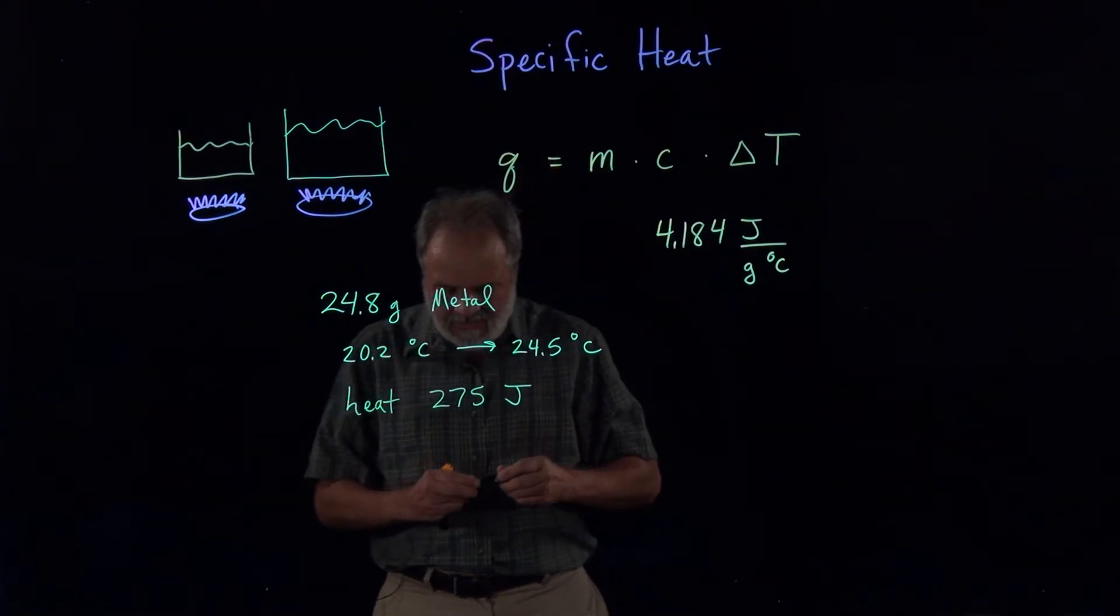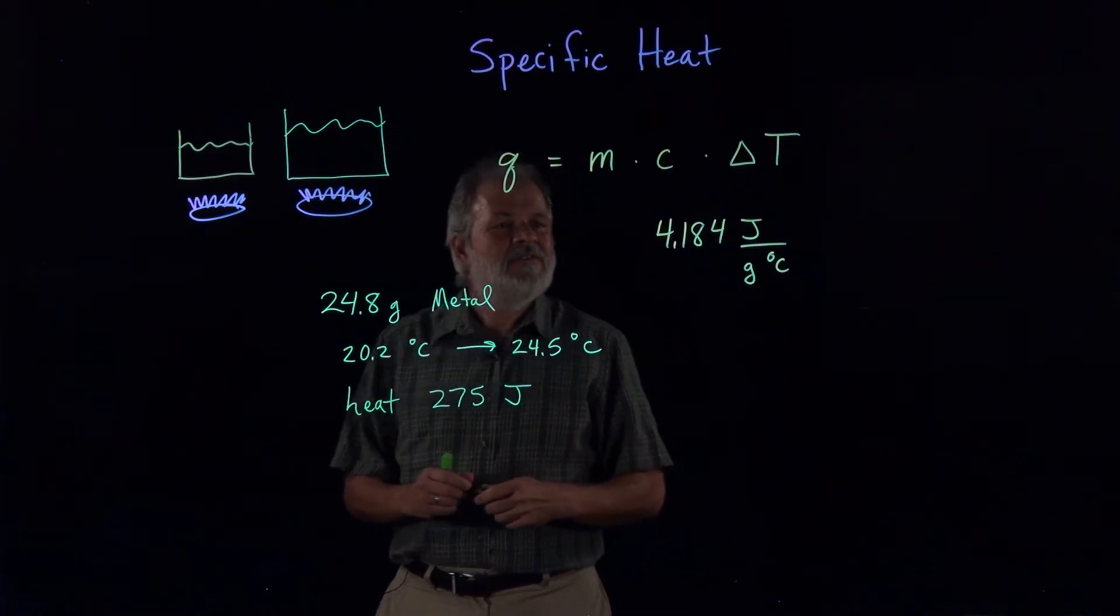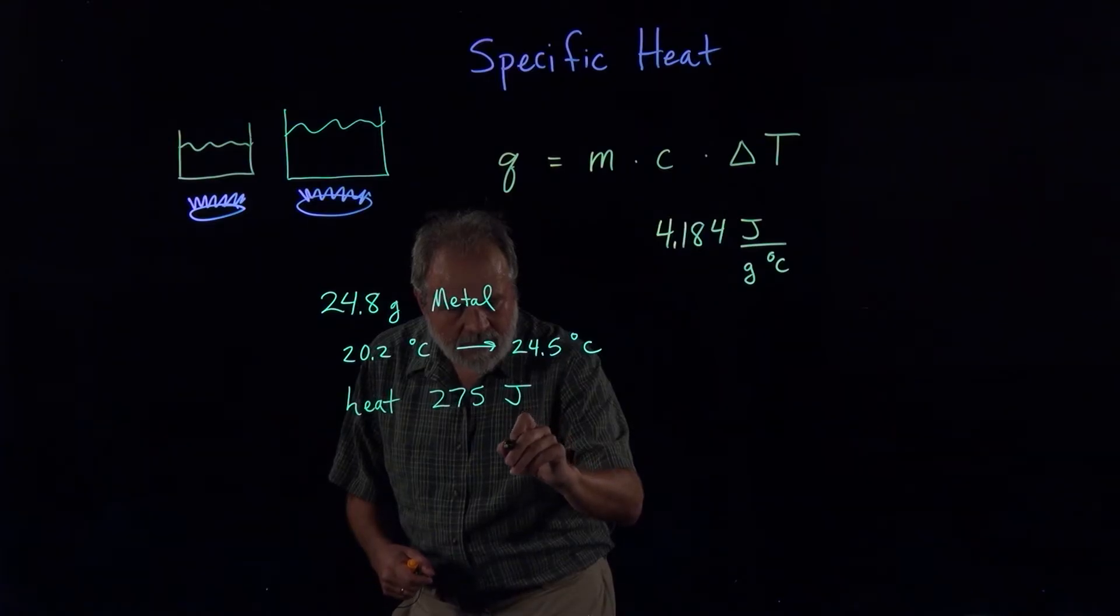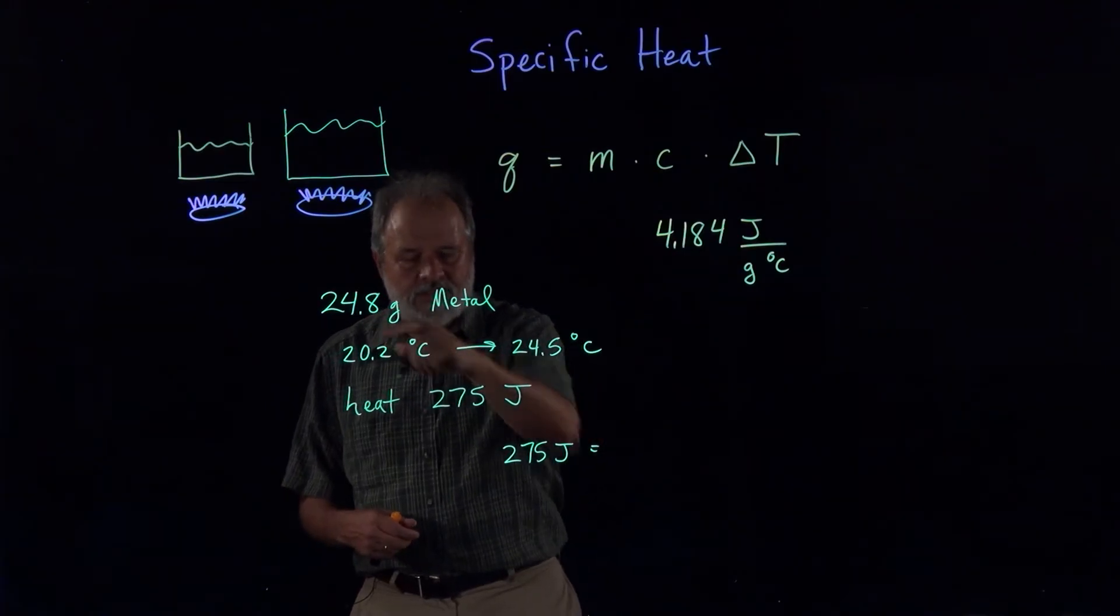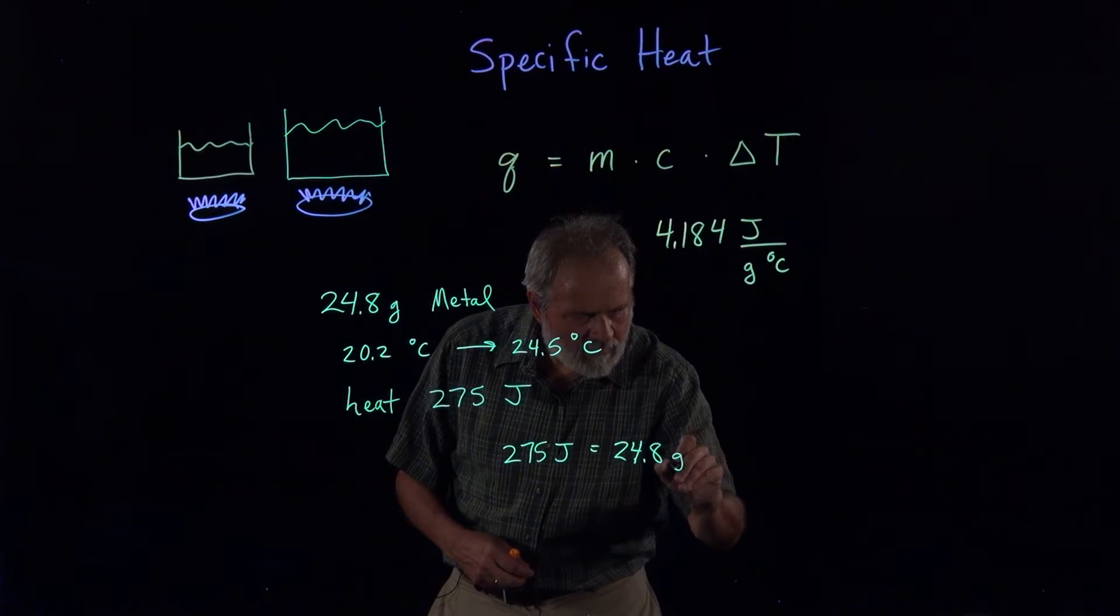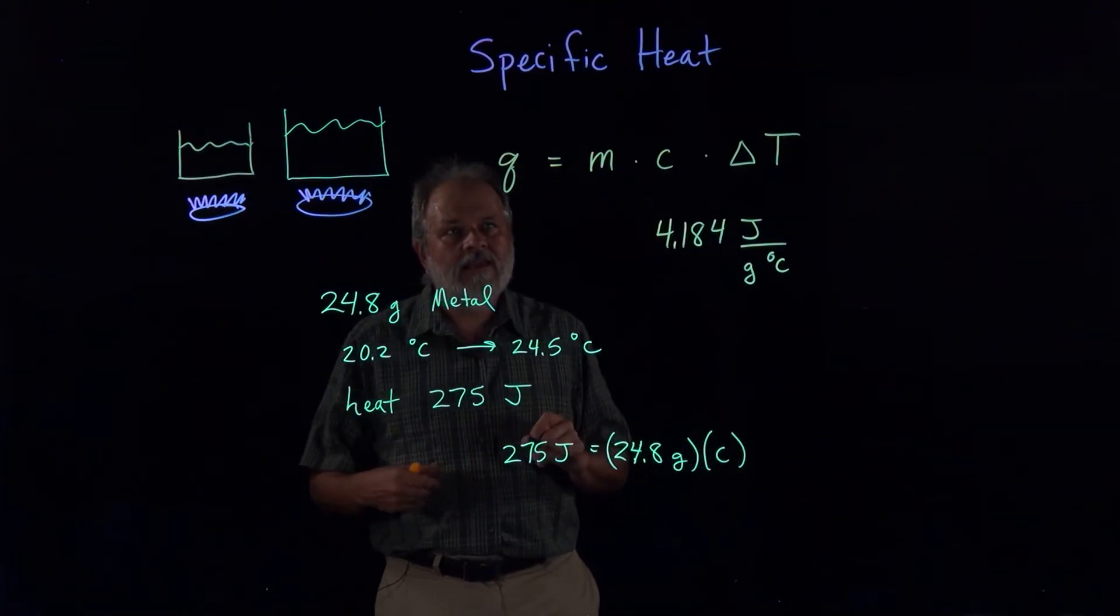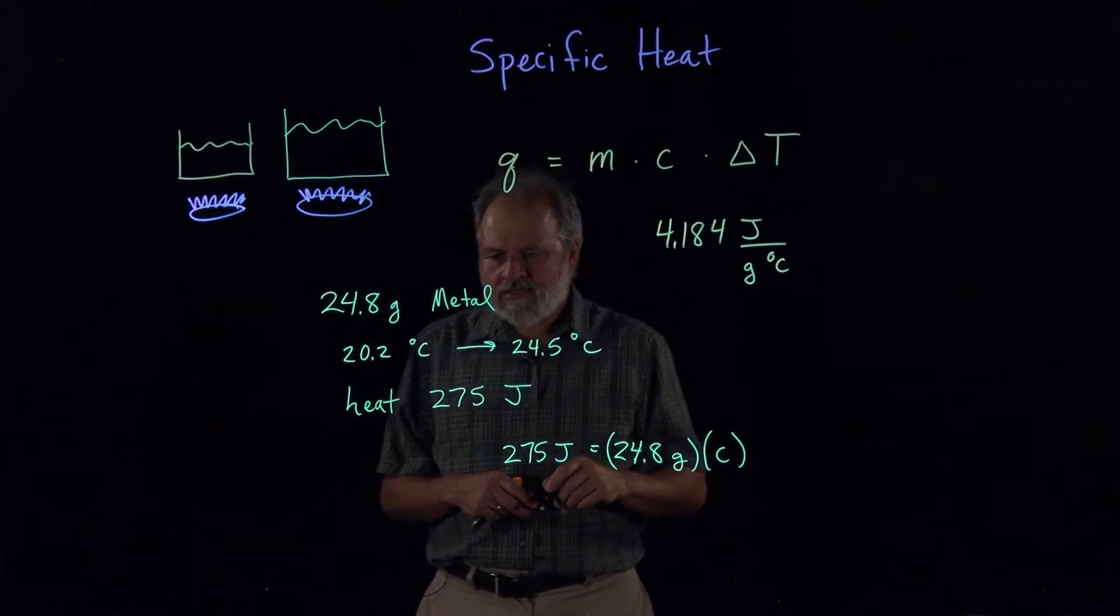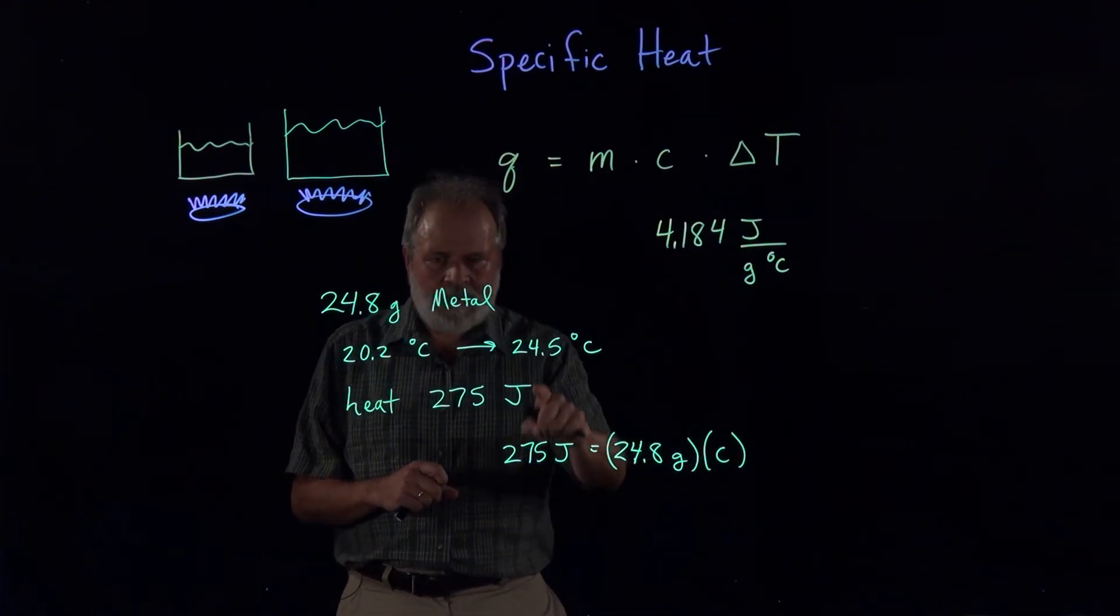Just plugging all these numbers in, and of course realizing that we can't use C equals 4.184 here. So the amount of heat, 275 joules, is equal to the mass, which is 24.8 grams of the metal, times the specific heat constant that we're looking for for this metal. It's not that number. It's going to be much smaller, because remember water has a very high heat capacity, warms up very slowly.